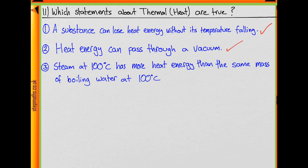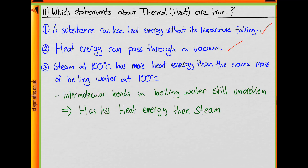Statement 3: steam at 100 degrees Celsius has more heat energy than the same mass of boiling water at the same temperature. In boiling water, the intermolecular bonds between the water molecules are still unbroken, whereas in steam, heat energy was taken in to break those intermolecular bonds. This implies that steam has more heat energy than boiling water, so statement 3 is also true.